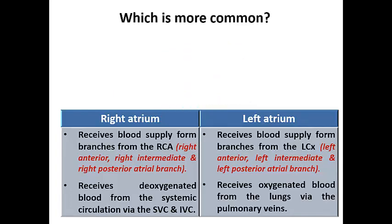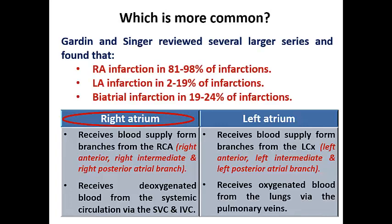Which is more common — right atrial infarction or left atrial infarction? Of course it is the right atrium, because it receives less oxygenated blood than the left atrium. In a paper published by Gordon and Singer, they reviewed several large series and concluded that right atrial infarction occurred in nearly 81 to 98 percent of infarctions, left atrial infarction in 2 to 19 percent, and bi-atrial infarction in 9 to 24 percent.